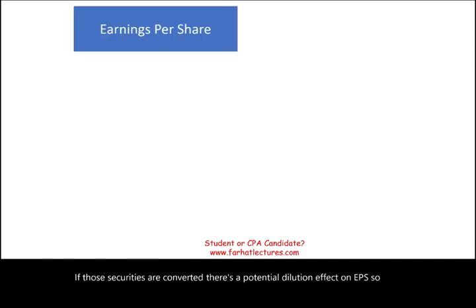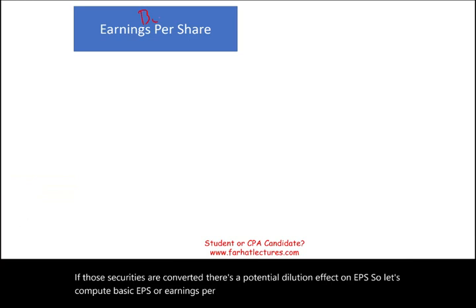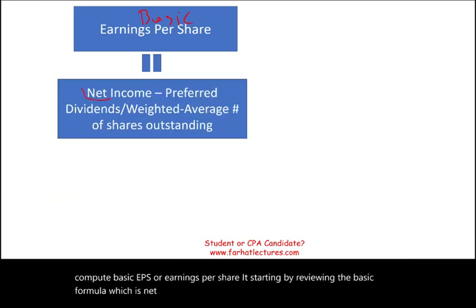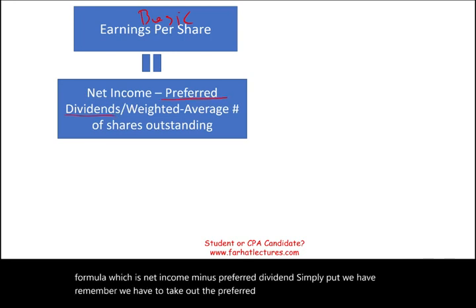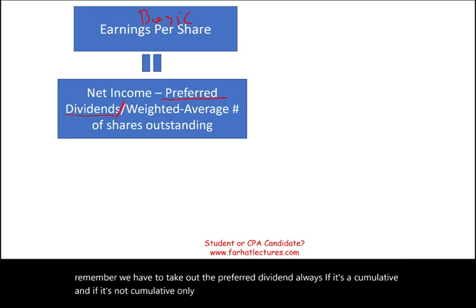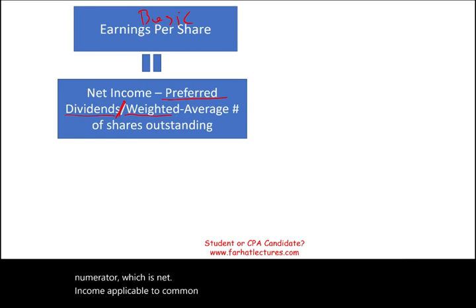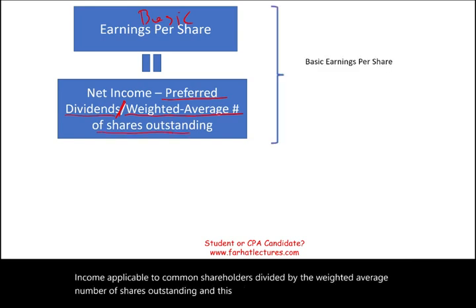Let's review the basic EPS formula, which starts with net income minus preferred dividends. Remember, we always subtract preferred dividends if they are cumulative, and if non-cumulative, only if declared. We divide this numerator — net income applicable to common shareholders — by the weighted average number of shares outstanding. That gives us basic earnings per share.